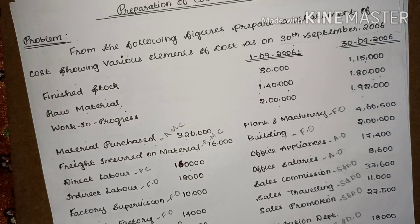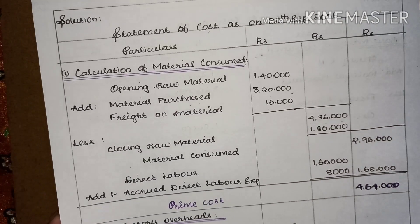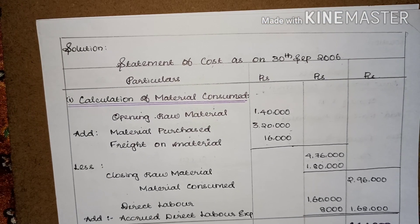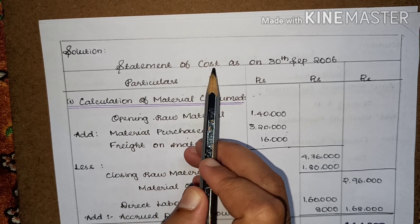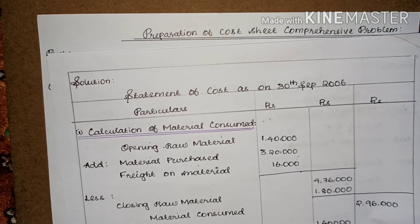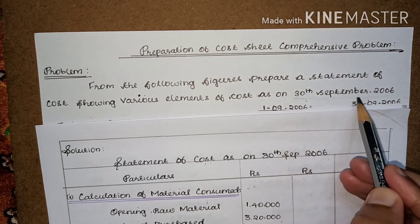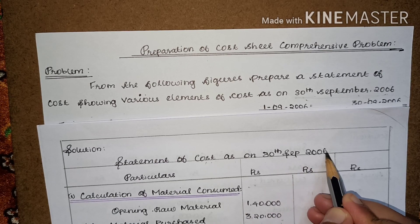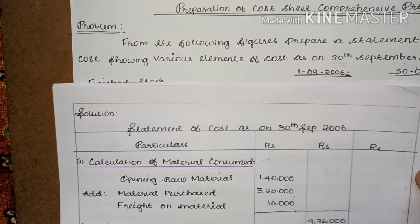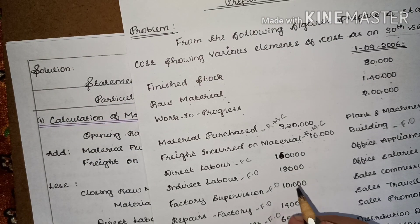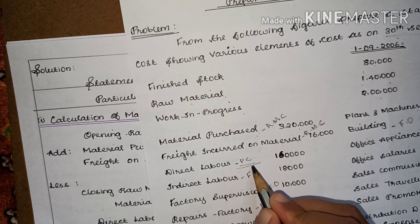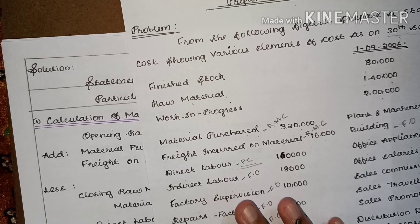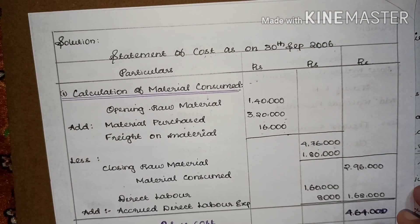Based on this question, we are going to prepare a cost sheet. The first thing to do is draw the format correctly and write the heading as 'Statement of Cost as on 30th September 2006.' The second step is to identify items coming under prime cost. Only direct labor is there, plus we need to find material consumed to get direct material. So the first calculation is the calculation of material consumed.